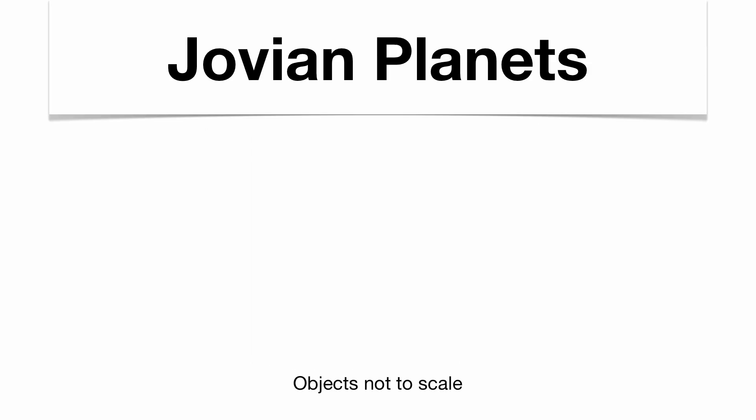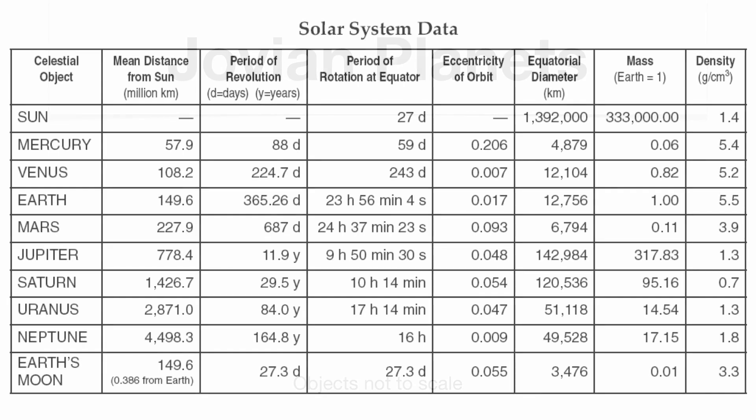So those are the basic planets that we'll have in our solar system. Now you do have a chart in your reference table, page 15, that you really should be able to learn how to use. I do have another podcast on this chart, so please make sure you check that one out as well. So that's it for now. Thanks so much.